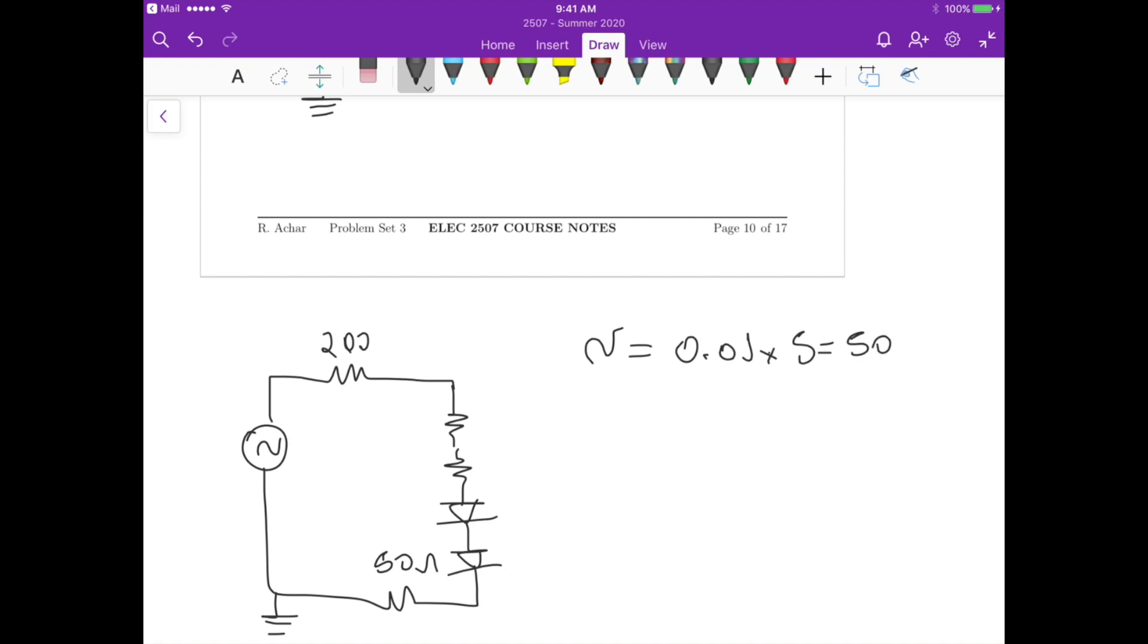You can say that we have the ground here and this is plus or minus one percent, so this small signal voltage V is going to be 0.01 times 5 which is 50 millivolts. So this is 50 millivolts, this is 1.25, this is 1.25.